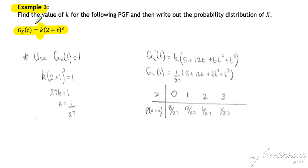If we've got an unknown in our probability generating function, we can use this important result mentioned earlier in video 1, that gx of 1 is always equal to 1.